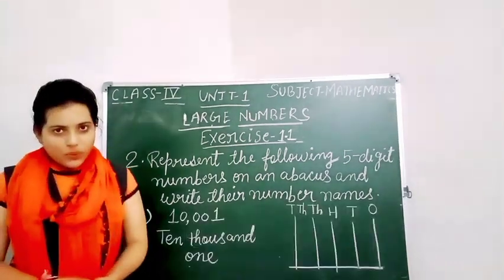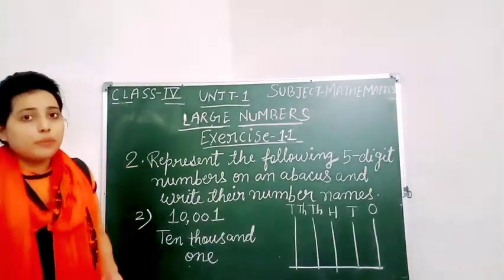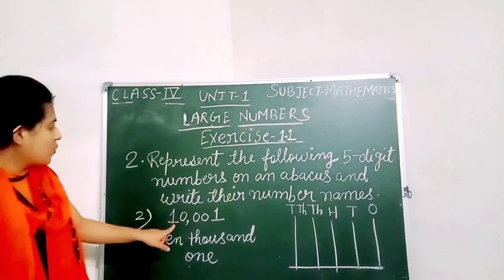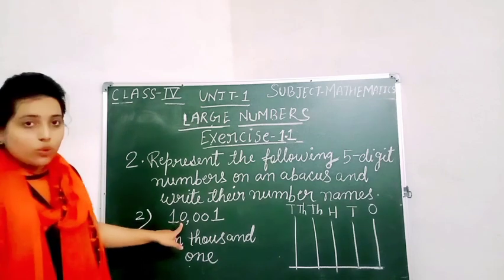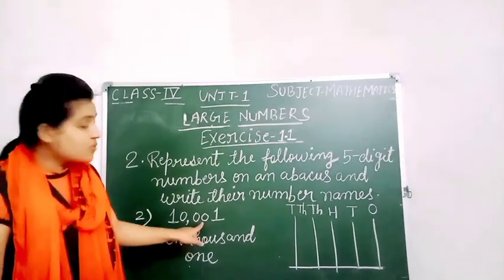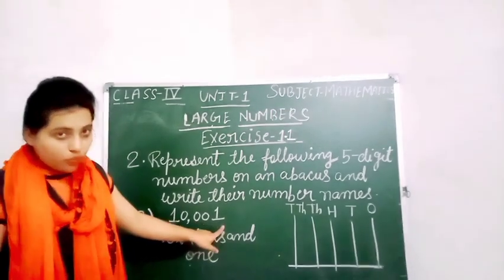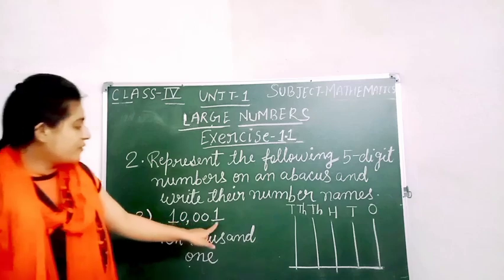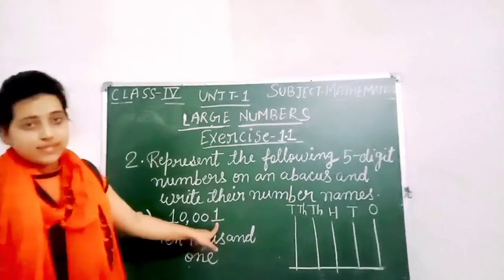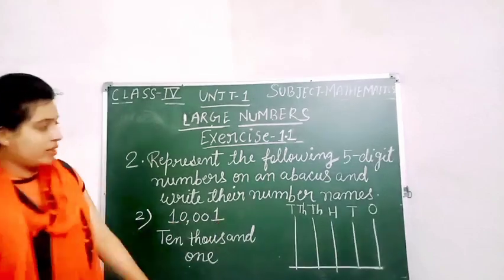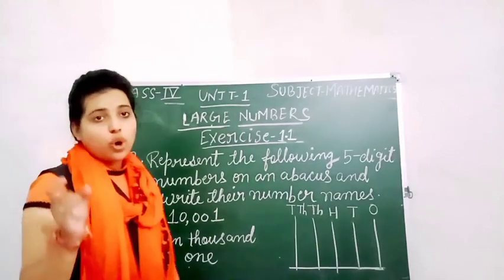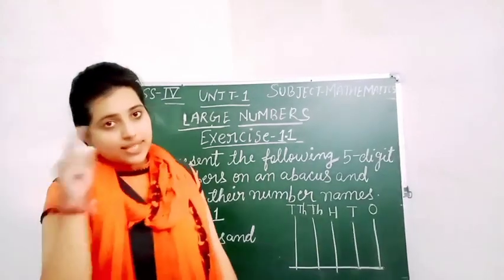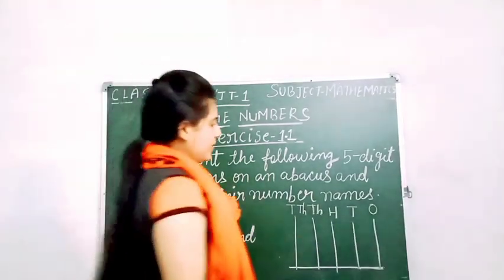Now look at question number 2. The number is 1, 0, 0, 0, 1 — that is 10,001. In the 1's place the number is 1, so we will draw 1 bead in the 1's place.